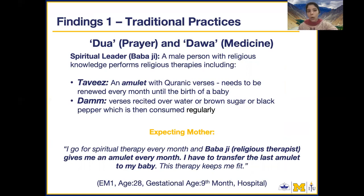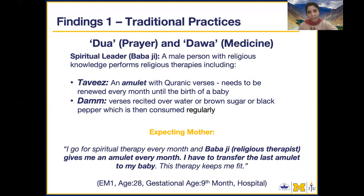In Pakistan, when we talk about traditional practices, there are two concepts: the first is dua, which is prayer, and the second is medicine, which includes antenatal care with iron and calcium intakes. In dua, there is a spiritual leader — usually a male personality with religious knowledge — who performs religious therapies, of which there are two types.